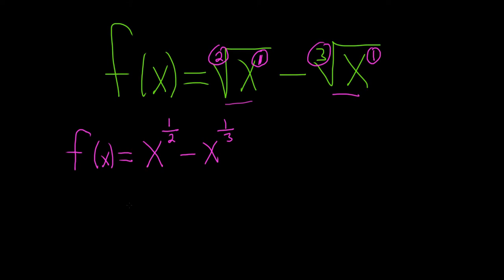Now we're ready to take the derivative. So f prime of x, the power rule says you take this and you put it in the front, so it'll be 1 half x, and then you subtract 1, so it's 1 half minus 1.